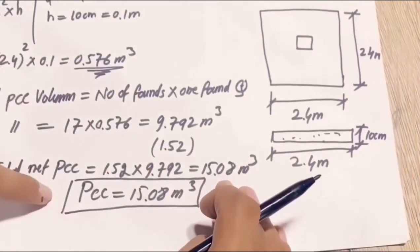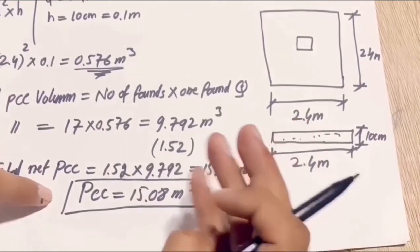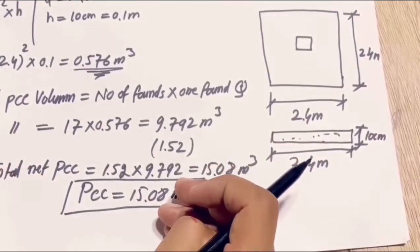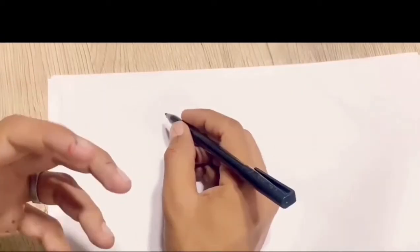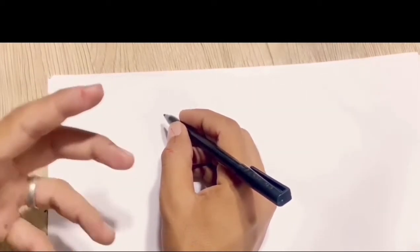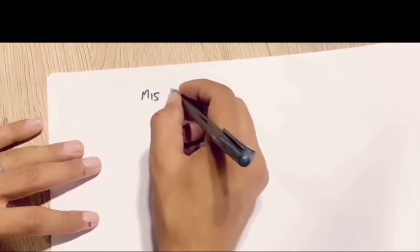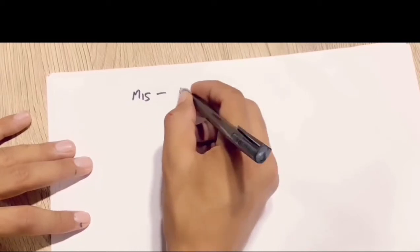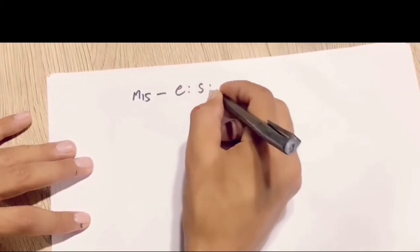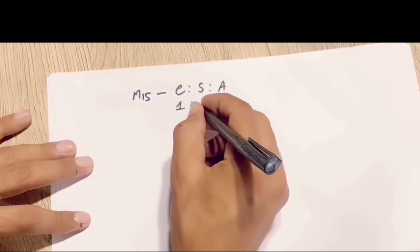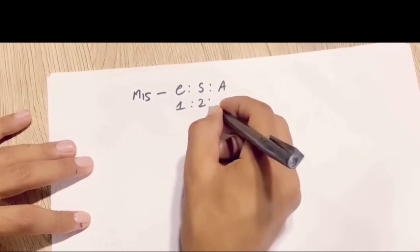Now we will calculate the material for this quantity of PCC — like cement, sand, and aggregate, and also water. For PCC we normally use grade M15. If you want to know more about the grades of concrete, watch the previous video. For M15, the cement, sand, and aggregate ratio is 1:2:4.